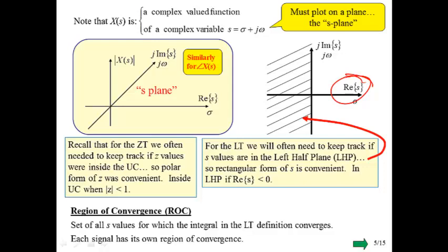Just like for the Z transform, we sometimes have to worry about the region of convergence. We use e to the minus st, and we can control the sigma value to force the Laplace transform integral to converge for a wider class of signals. For a given signal, there will be certain values of s for which the integral works, and certain values for which it does not. The values of s for which the integral converges is called the region of convergence.